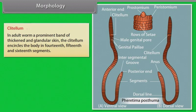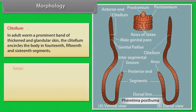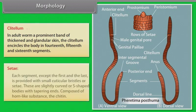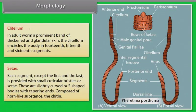Each segment except the first and the last is provided with small cuticular bristles or setae. These are slightly curved or S-shaped bodies with tapering ends, composed of horn-like substances called chitin.